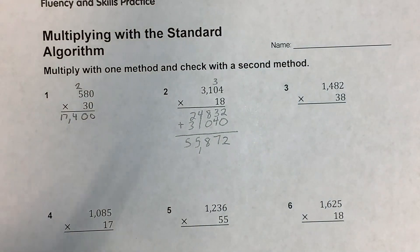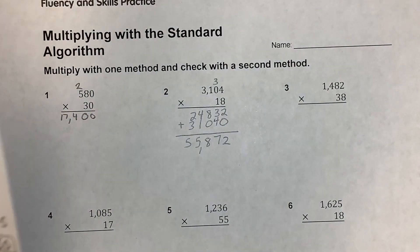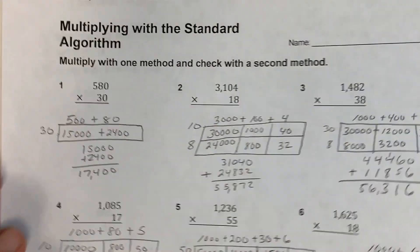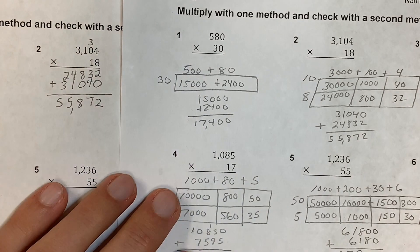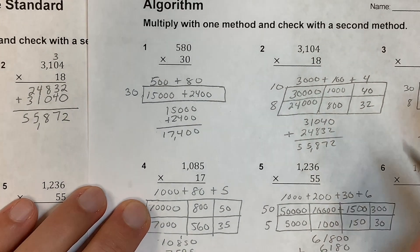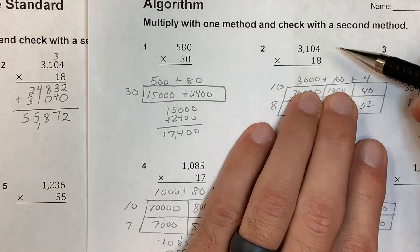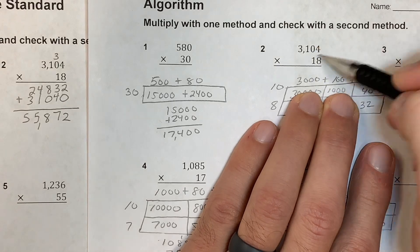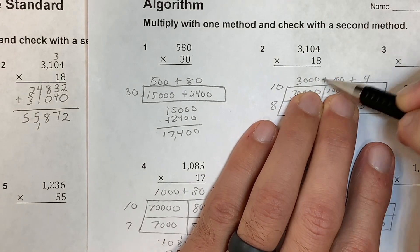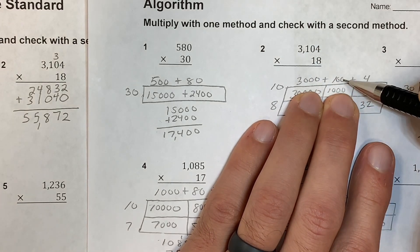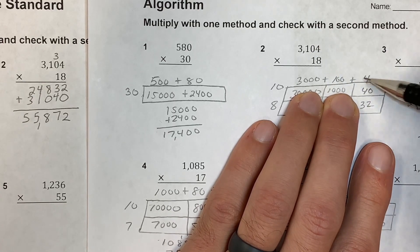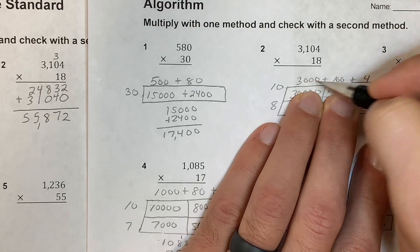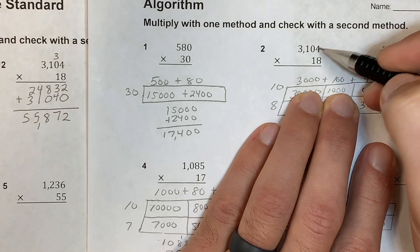Next I'm going to do that same problem using the area model. I broke 3,104 down into expanded form: 3,000 plus 100 plus 4 — skipping the tens place since there's nothing there, because 0 times anything is 0. Then I take 3,104 times 10 and 3,104 times 8, and add those results together.